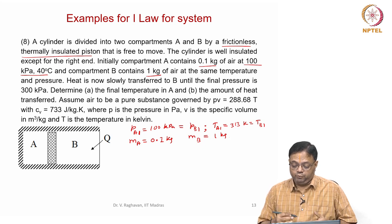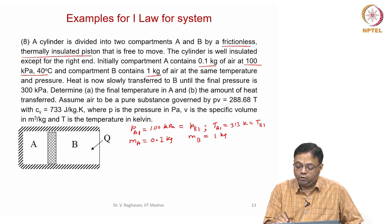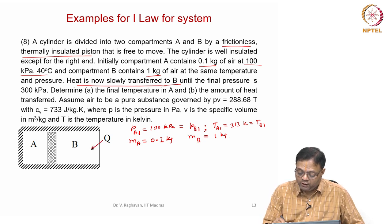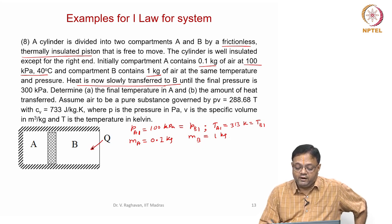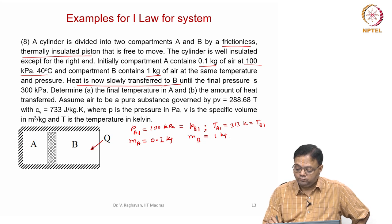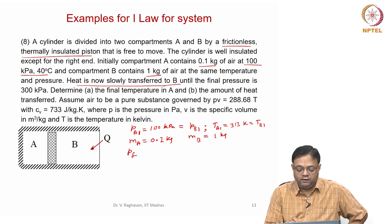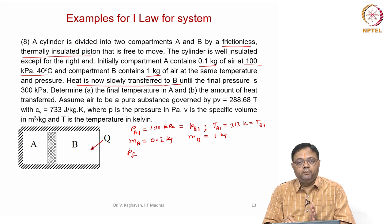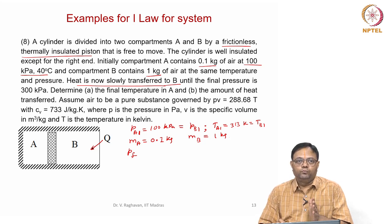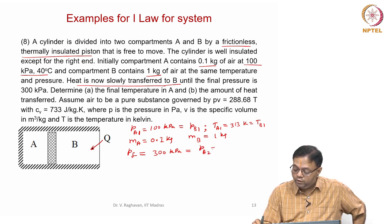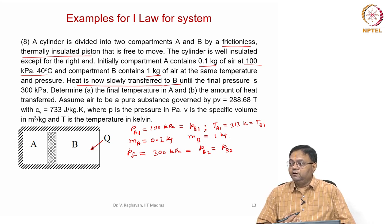To proceed we need to understand what is happening. Heat is slowly added to compartment B from the uninsulated side until the final pressure reaches 300 kilopascals. Since the piston is frictionless and free to move, the pressure must equalize — Pa2 = Pb2 = 300 kilopascals.